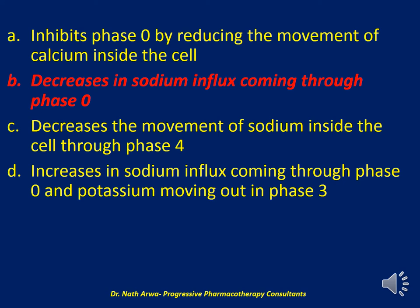Phase 0 of the action potential in the ventricular myocyte reflects a sodium inward movement, which is different from the nodal potential where sodium inward current occurs in phase 4 — the two tissues behave differently. Phase 1 reflects potassium outward movement, phase 2 reflects calcium inward movement, phase 3 reflects potassium outward movement, and phase 4 reflects sodium and potassium exchange, resulting in a neutral effect.